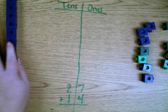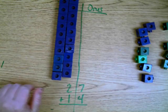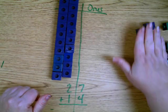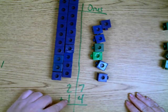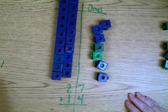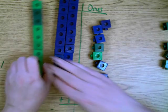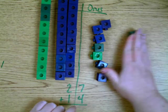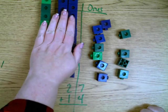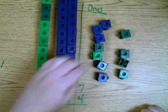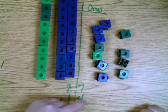So I have two tens. Here are my two tens, and I have seven ones. Now I also have one group of ten in fourteen and four ones in a group of fourteen. This is the concrete representation of tens and ones of 27 plus 14.